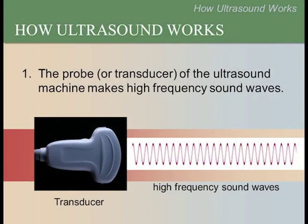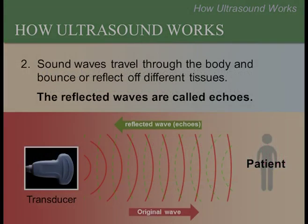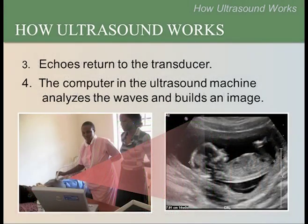The process to create an ultrasound image is fairly simple. First, the transducer produces high-frequency sound waves that the human ear cannot hear. Those sound waves travel through the body and bounce off different tissues. In this diagram, the transducer is on the left and the patient is on the right. The red lines represent the sound waves sent into the body by the transducer. The green lines are the reflected sound waves, called echoes, that return to the transducer. The reflected echoes go back to the transducer, and the computer analyzes these waves and builds an image.